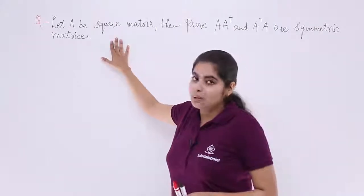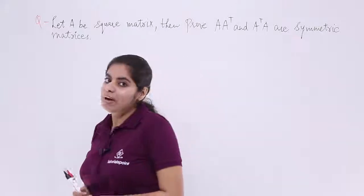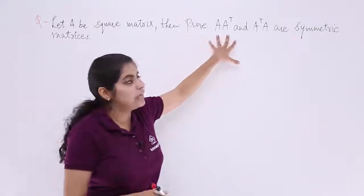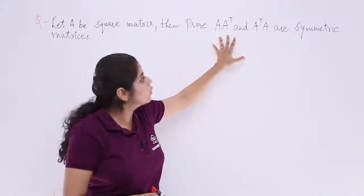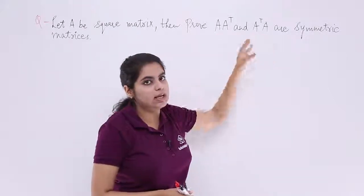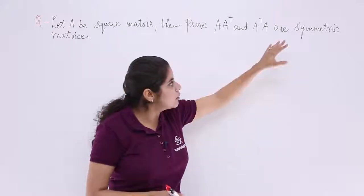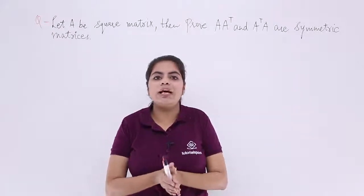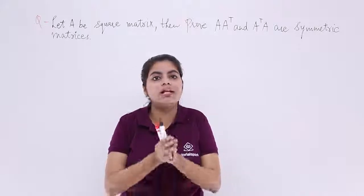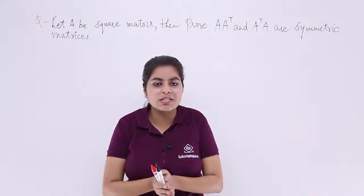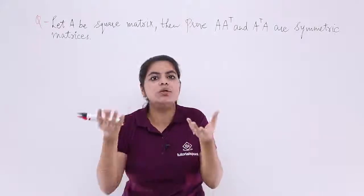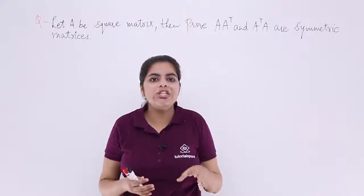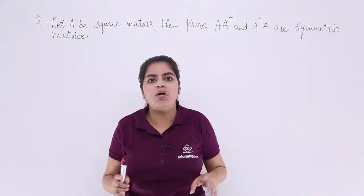Let A be a square matrix. I have been given a matrix A which is a square matrix. Then we have to prove that A multiplied by A transpose, and A transpose multiplied by A, are both symmetric matrices. The definition of a symmetric matrix is any matrix equal to its transpose, meaning A equals A transpose, or A-ij equals A-ji for all i, j.